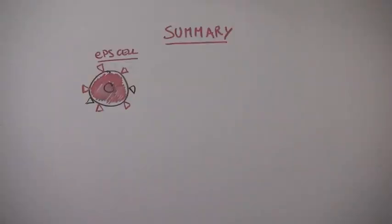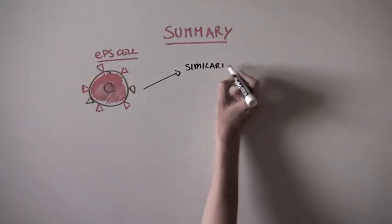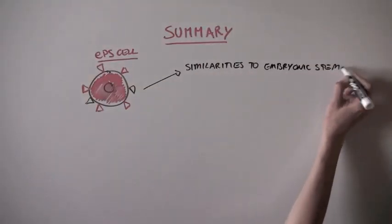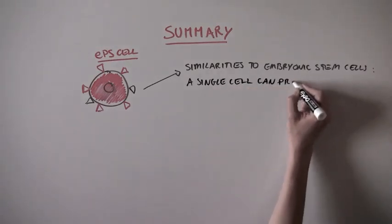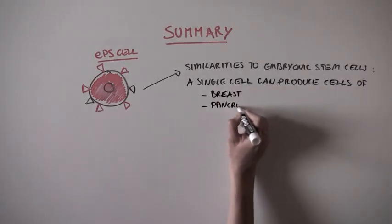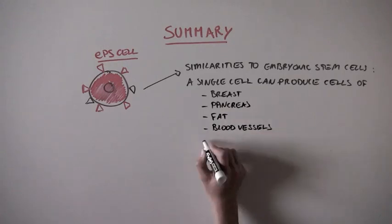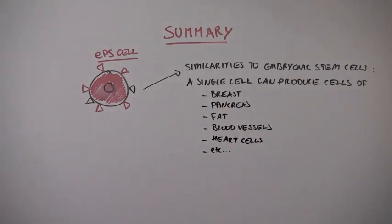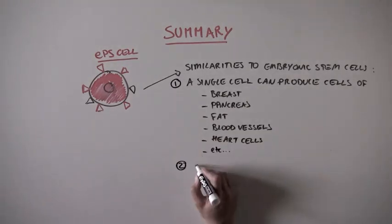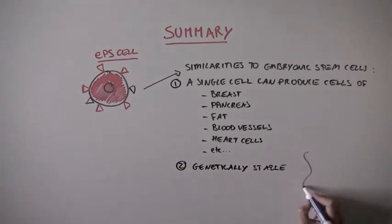By isolating and studying these EPS cells, the scientists found some similarities to embryonic stem cells. A single EPS cell can produce cells of all kinds of different tissues: breast, digestive system, heart, blood vessels. And these EPS cells were genetically stable, unlike cancer cells.